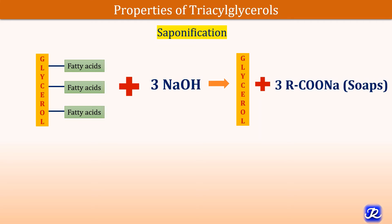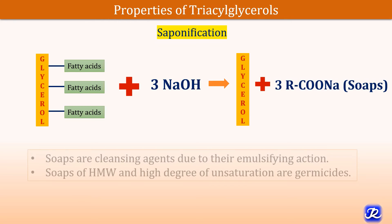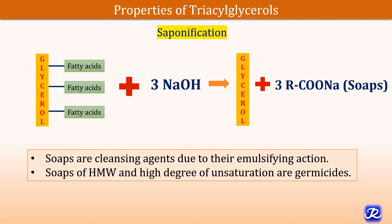The second property of triacylglycerol is saponification. It is the hydrolysis of triacylglycerol by alkali to produce glycerol and soaps. Soaps are cleansing agents due to their emulsifying action. Soaps of high molecular weight and high degree of unsaturation are germicides. Soap molecules kill coronavirus by disrupting the fatty layer or coat surrounding the virus.